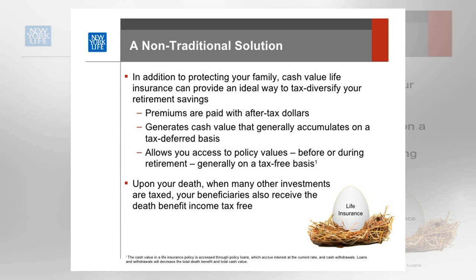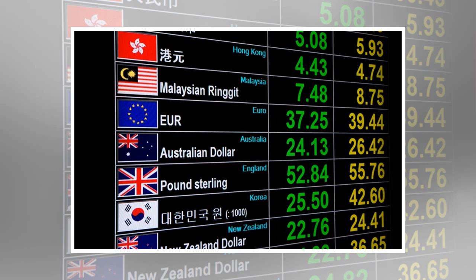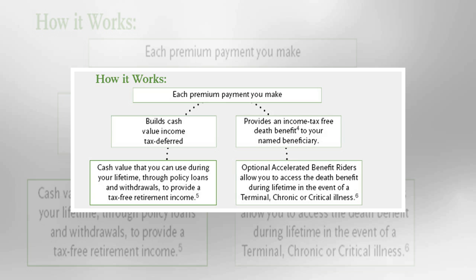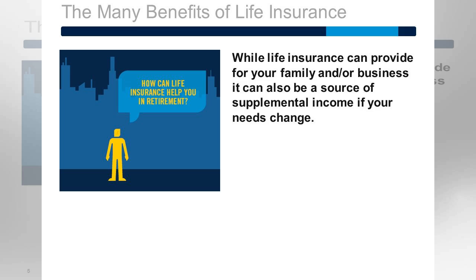You might ask: when I'm retired, isn't taking out a loan a bad idea? Typically, we want to reduce our fixed expenses during retirement, and typically, adding a fixed loan payment to our retirement budget would indeed be a bad idea. However, taking a loan from your life policy doesn't add any payments to your budget — none. In fact, the insurance company doesn't even expect you to repay this loan during your lifetime. At your death, the loan will be paid off from a portion of the death benefit, while the remainder will go to your beneficiaries.